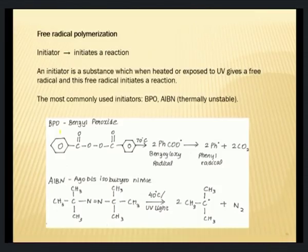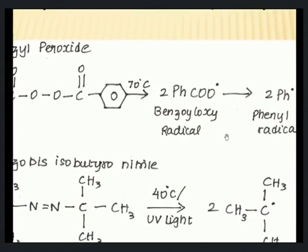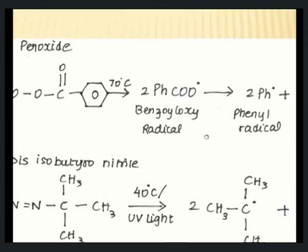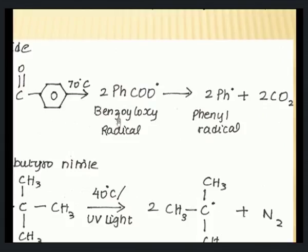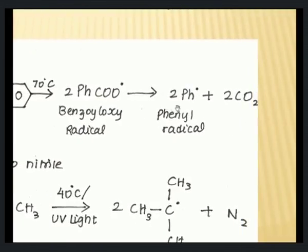The most commonly used initiators in free radical polymerization are benzoyl peroxide (BPO) and AIBN (azobisisobutyronitrile). Both are thermally unstable and break down on exposure to heat to form radicals. In the case of benzoyl peroxide — with structure Ph-C(=O)-O-O-C(=O)-Ph — heating to 70°C or exposure to electromagnetic radiation breaks it down into benzoyl oxy radicals. Two benzoyl oxy radicals are formed from one molecule of benzoyl peroxide, along with CO₂.